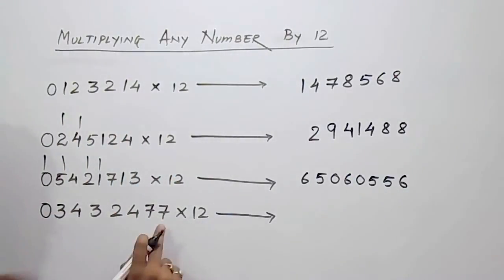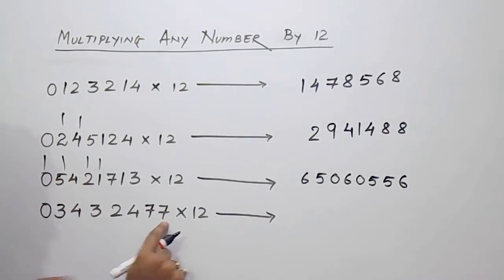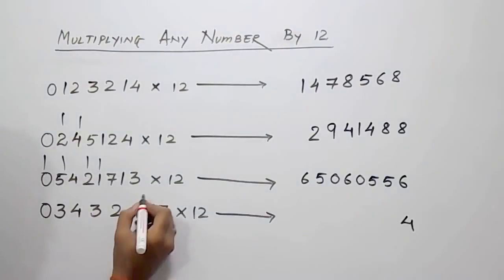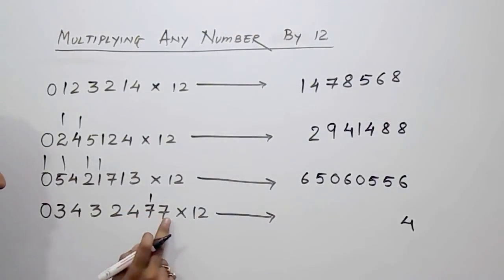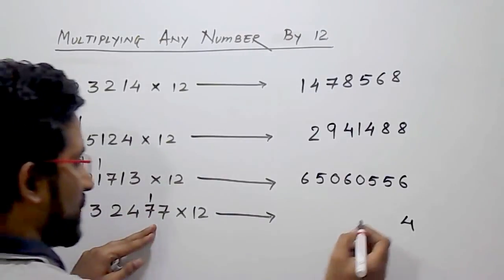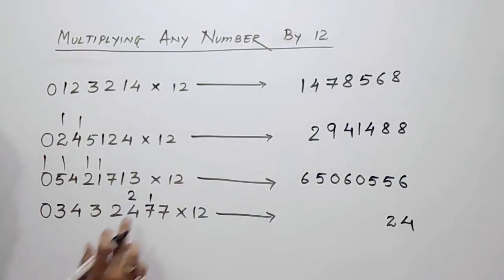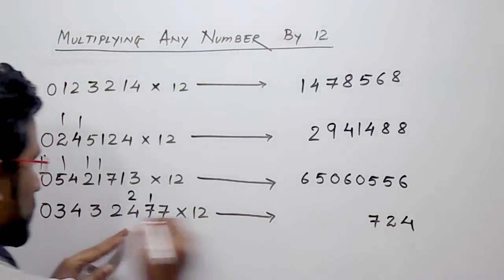Now see the next one — for example, now it is 7 in the unit place. 7's double is 14, so we'll write 4 and carry forward 1. Now 7's double is 14, 14 plus 7, that is 21, and carry forward 1 gives 22, so 2 will carry forward. Now 4's double is 8, 8 plus 7, that is 15, 15 plus 2, it will become 17 — so 1 will carry.